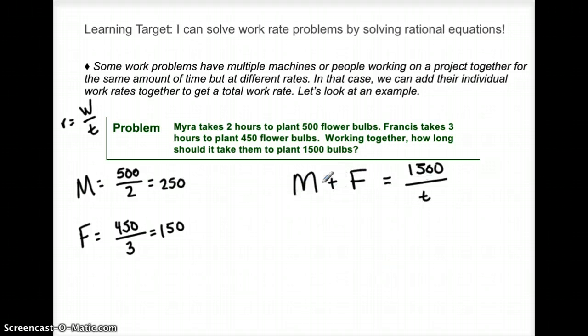So what's the combined Myra plus Francis work rate? 1500 over the time, which is what we're solving for. So plug in what I know about Myra and Francis. Myra is 250.